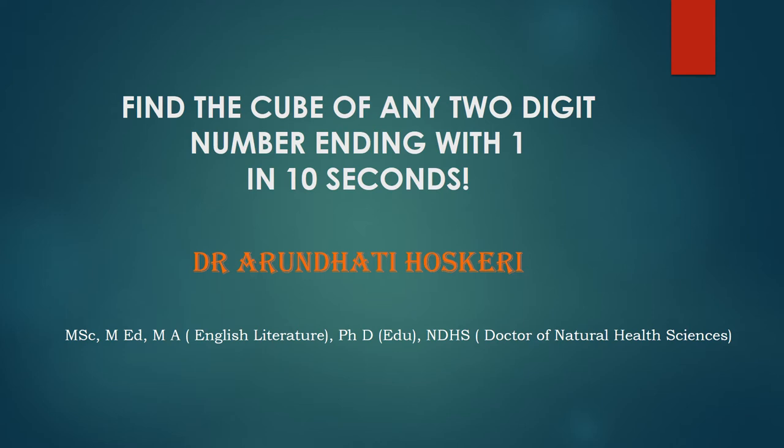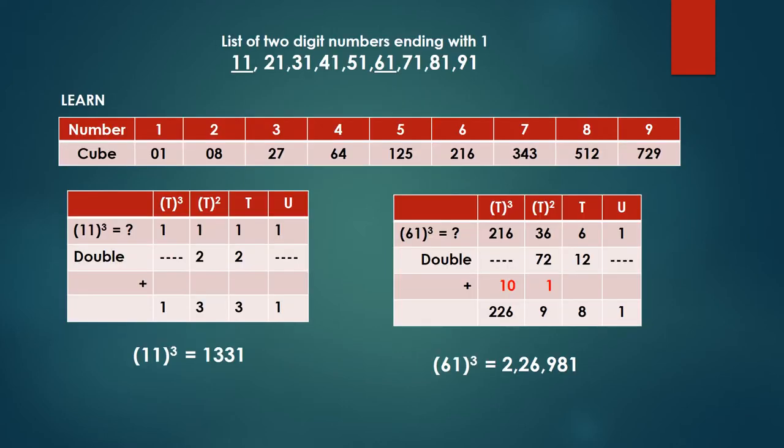So let us see how to calculate this quickly, cube of any two-digit number ending with one. First of all let us understand which are these numbers: 11, 21, 31, 41, 51, 61, 71, 81, and 91.